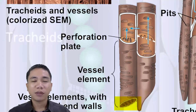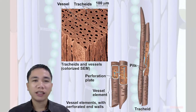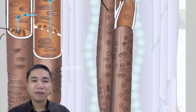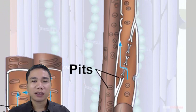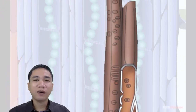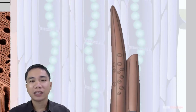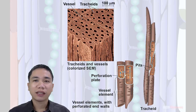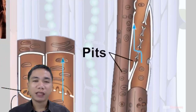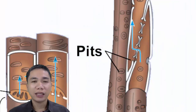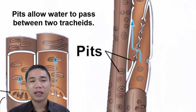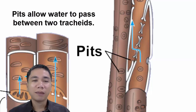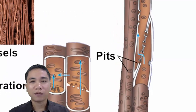Vessels are long tubes made up of individual cells called vessel elements, which are open at each end and have bar-like strips of wall material. The tubes are formed when cells are joined end-to-end. Tracheids have relatively thick secondary cell walls, are tapered at each end, and overlap with those of other tracheids. Tracheids have no openings similar to those of vessels, but pairs of pits are present wherever two tracheids are in contact. Pits are areas where no secondary wall material has been deposited, allowing water to pass from cell to cell.